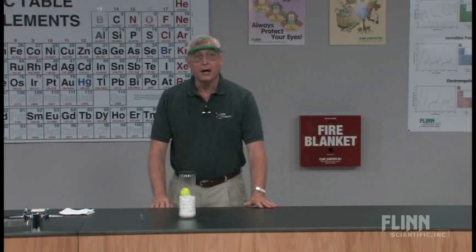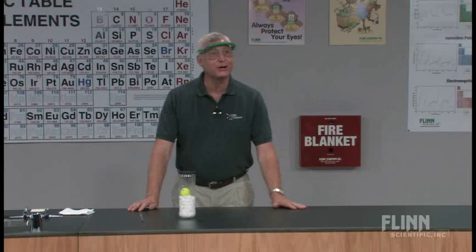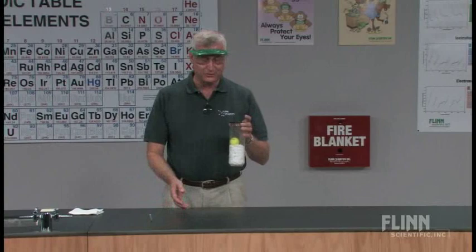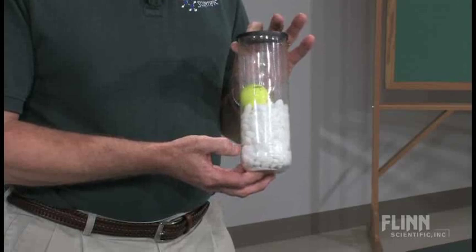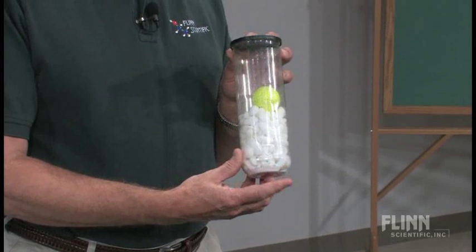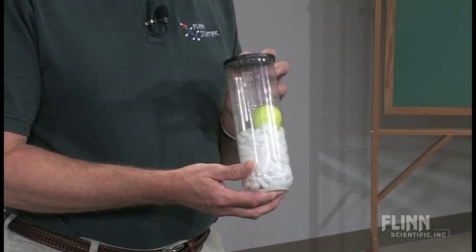I teach in an area where we like to stack them deep and teach them cheap, so I like things that are quick, simple, and easy to do. Today we're going to take a look at what is called the golf ball float. What I have is an empty tennis ball canister — cheap and free — some water softening salt, and a used yellow golf ball.